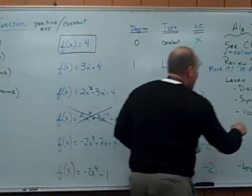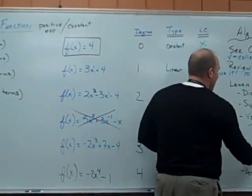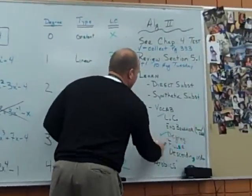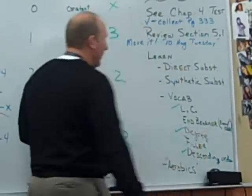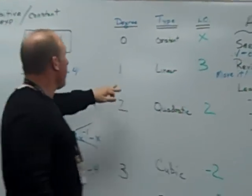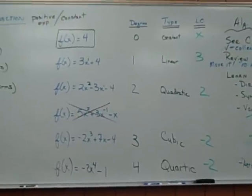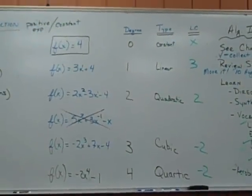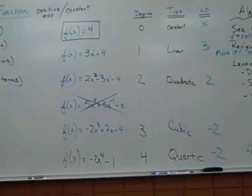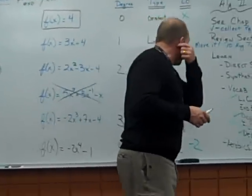So we've talked about leading coefficient. We've talked about degree. Now, what do you think the term filler means? Maybe we'll skip that for a second. We'll come back to it. We've said descending order. We've mentioned those terms. Any problems about degree, type, leading coefficient?